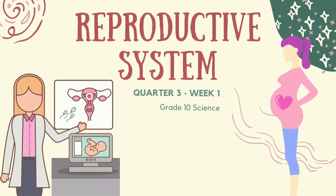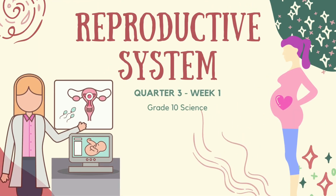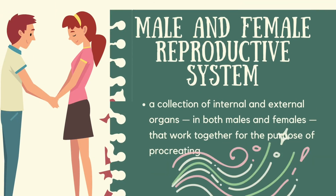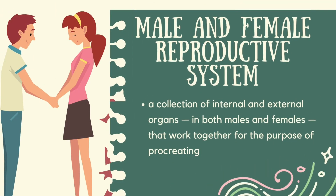Our topic is about the reproductive system. The male and female reproductive system is a collection of internal and external organs in both males and females that work together for the purpose of procreation.